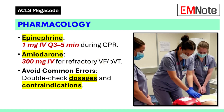Pharmacology: Medications play a significant role in ACLS. Epinephrine is administered intravenously at a dose of 1 mg every 3–5 minutes during CPR. Amiodarone is given intravenously at a dose of 300 mg for refractory ventricular fibrillation or pulseless ventricular tachycardia. Double-check dosages and contraindications to avoid errors.